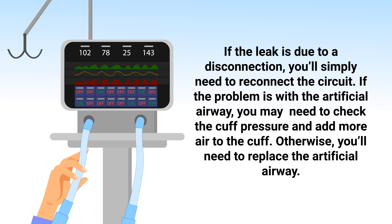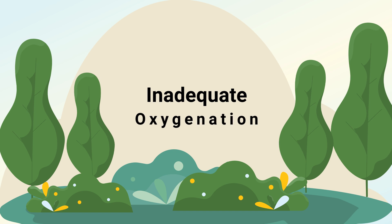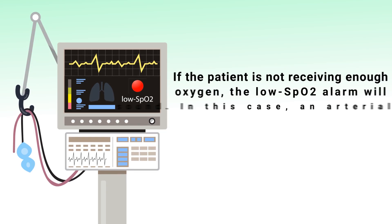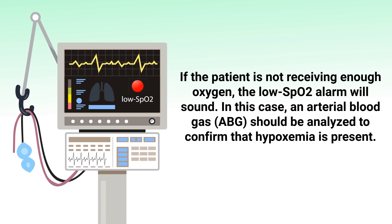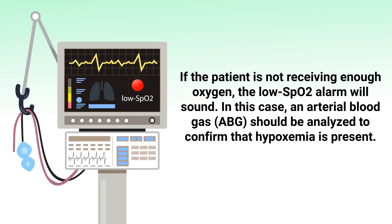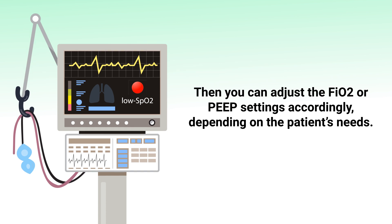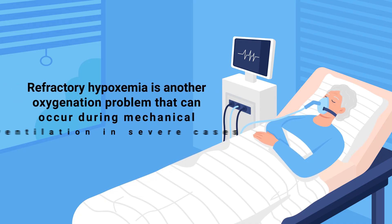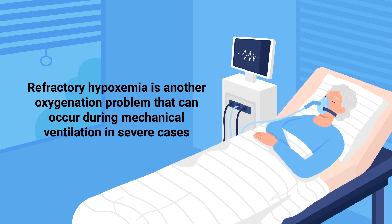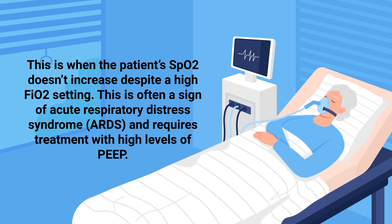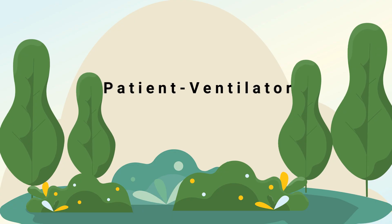Otherwise you'll need to replace the artificial airway. The next problem that may occur is inadequate oxygenation. If the patient is not receiving enough oxygen, the low SpO2 alarm will sound. An arterial blood gas should be analyzed to confirm that hypoxemia is present. Then you can adjust the FiO2 or PEEP settings accordingly depending on the patient's needs. Refractory hypoxemia is another oxygenation problem that can occur in severe cases — this is when the patient's SpO2 does not increase despite a high FiO2 setting. This is often a sign of acute respiratory distress syndrome and requires treatment with high levels of PEEP.